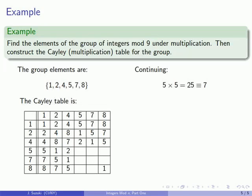5 times 5 is 25 which is congruent to 7 again because 25 minus 7, 18 is a multiple of 9. Likewise 5 times 7 is 35 congruent to 8. 5 times 8 is 40 congruent to 4 and that allows us to fill in some more of our Cayley table.